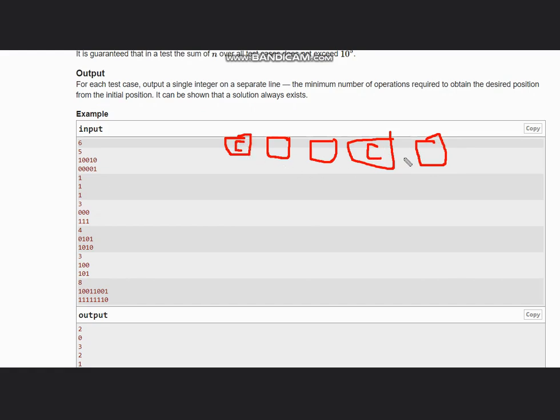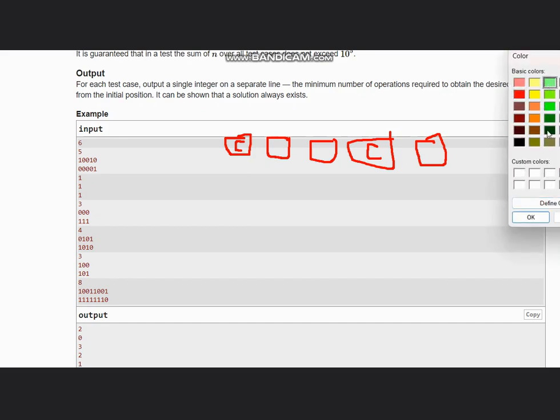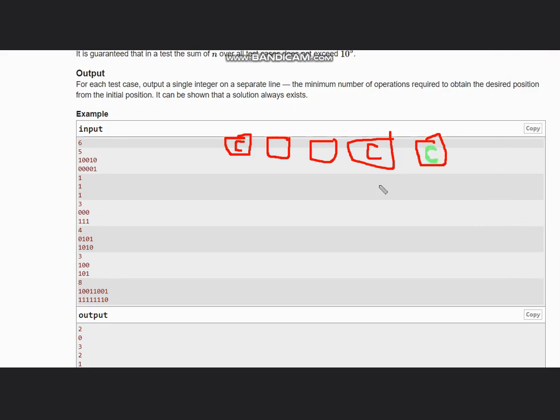For final state we need the cat here. So to put the cat here, what we can do: we will move the first cat to the last box and remove this cat. So total moves are two - one for this and second one for removing.